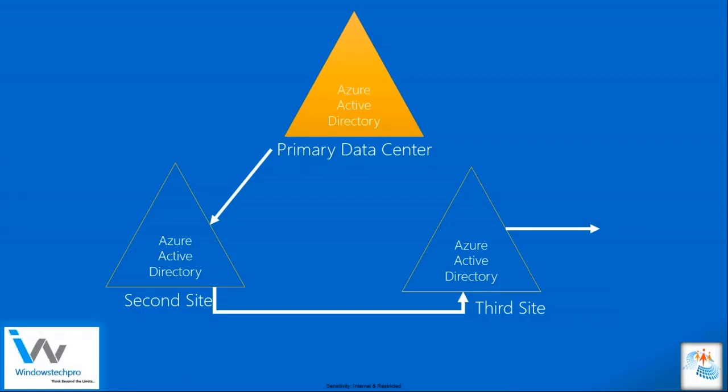Microsoft currently has data centers in 36-plus locations. In this model, if the primary site goes down, the secondary site will pick up. If the secondary site is also not able to support you, it will extend further to another data center. Whether you're in India or anywhere else, your authentication will go through smoothly and you will not face any issues. That is how the Azure Active Directory data centers have been configured.